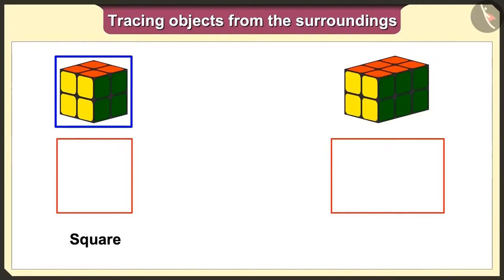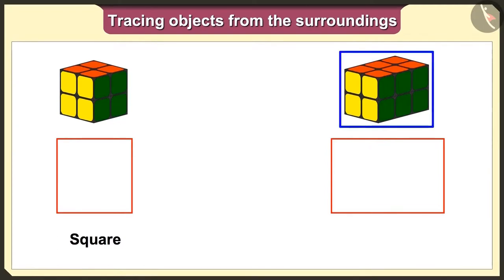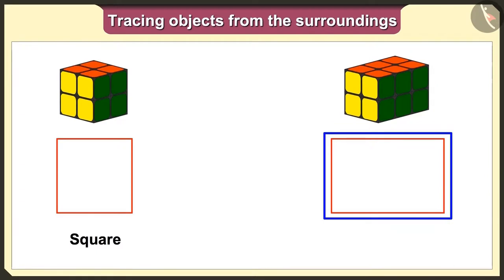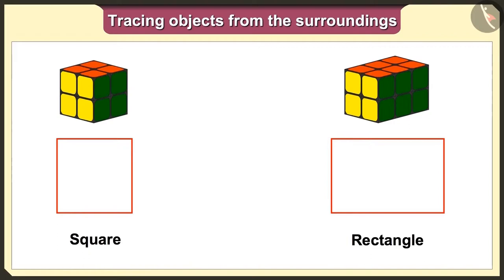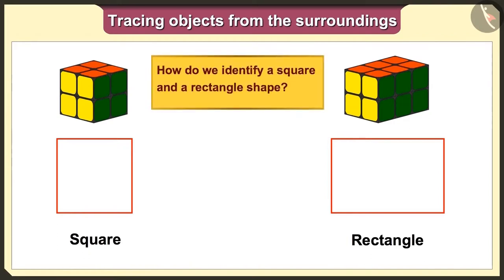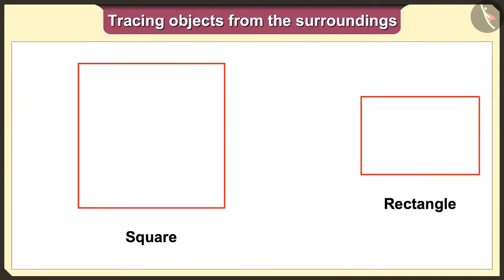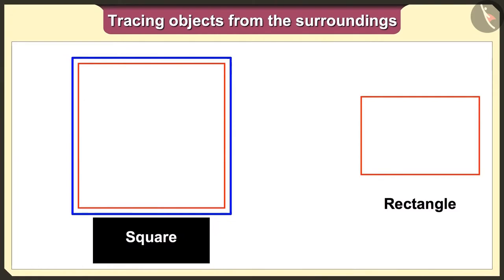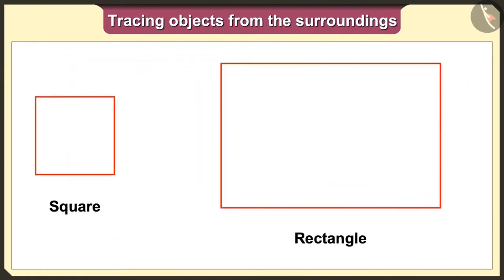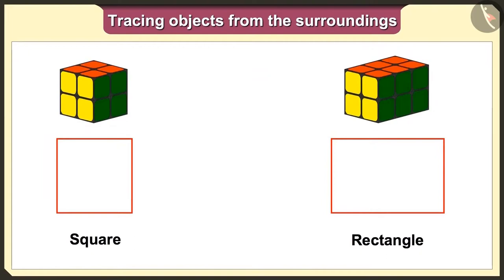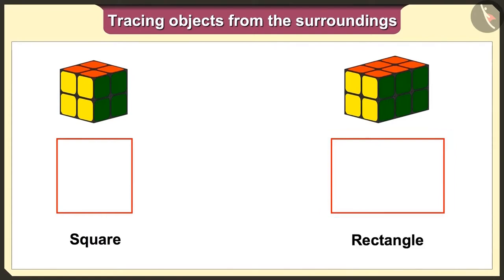Oh Tallman! We will get the square shape if we trace this cube toy. But when we trace this cuboid toy, we do not get a big square shape — we get a rectangle shape. But how will we identify this square and rectangle shape? Look carefully! The measurements of the sides are the same in a square shape. And in a rectangle, the measurements of the opposite sides are the same. Now I understand very well that the shape we get when we trace the cuboid is not a big square, but it is a rectangle.